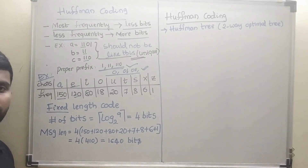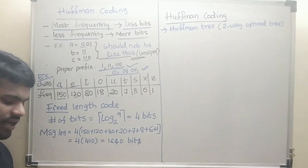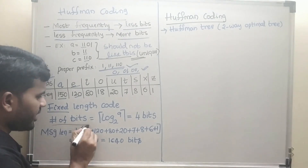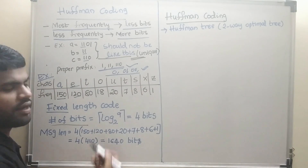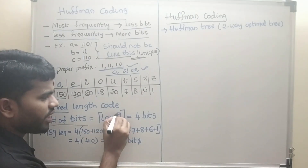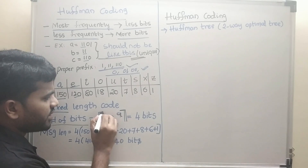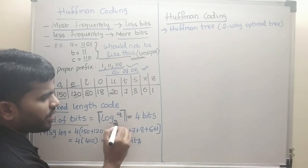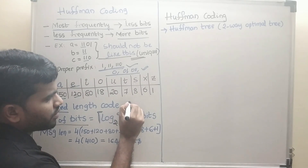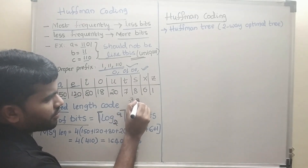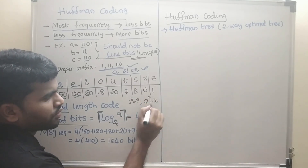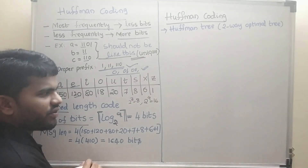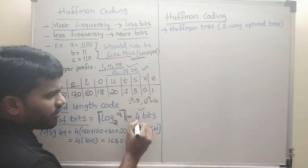If we consider fixed-length code, how many bits do we need? We have 9 different characters, so we need ceiling of log base 2 of 9. Since 2 to the power 3 gives 8 but we need more, 2 to the power 4 gives 16, so we need to take the ceiling — that is 4 bits.